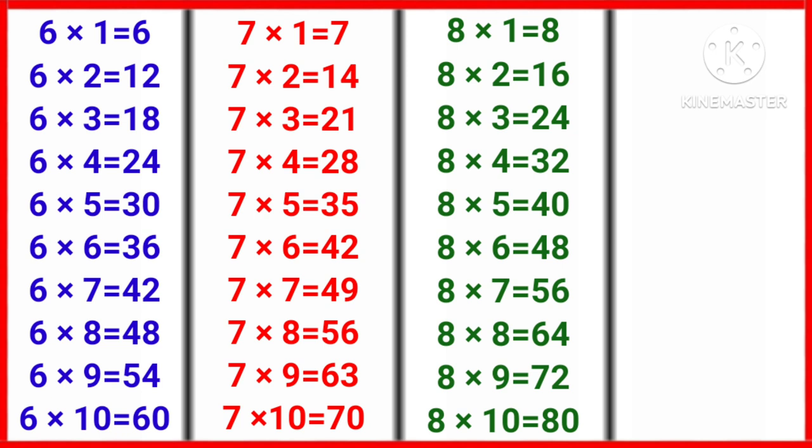Now let's learn the next table. 9 1s are 9, 9 2s are 18, 9 3s are 27.